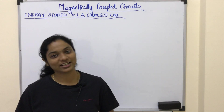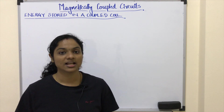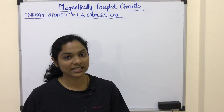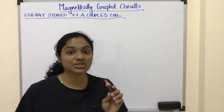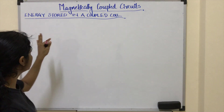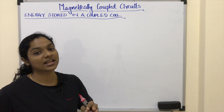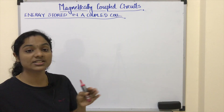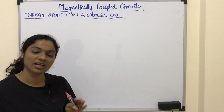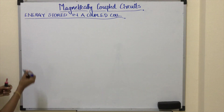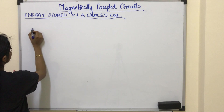Hi everyone, welcome to today's video. Today we are going to deal with transformers in magnetically coupled circuits. For that, we are going to derive the energy stored in a coupled coil, or we can say energy stored in a transformer. A transformer is the best example of a coupled circuit. So let's start with energy stored in a coupled circuit.